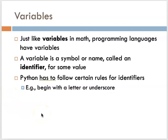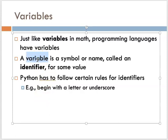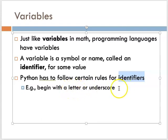In the same way, a variable in a programming language is a symbol or a name — also called an identifier — for some value. It represents some value; it's a placeholder for some value. Python has certain rules that these identifiers must follow: you can use numbers, letters, and underscores, but it has to begin with a letter or underscore — it can't begin with a number. All programming languages have their own particular syntax or naming rules for the different components in that language.